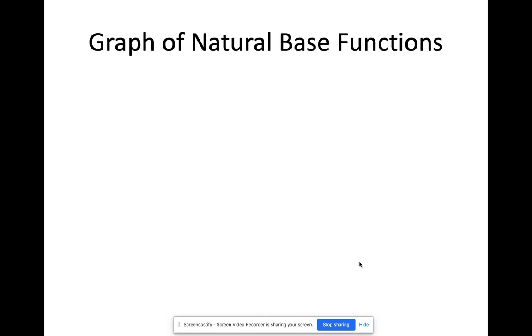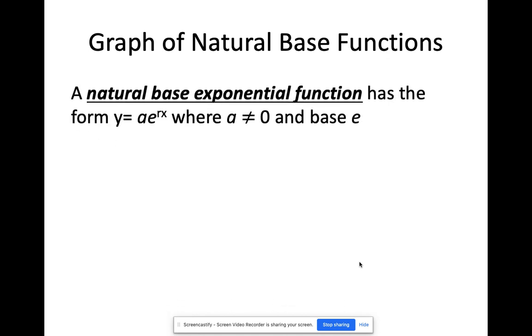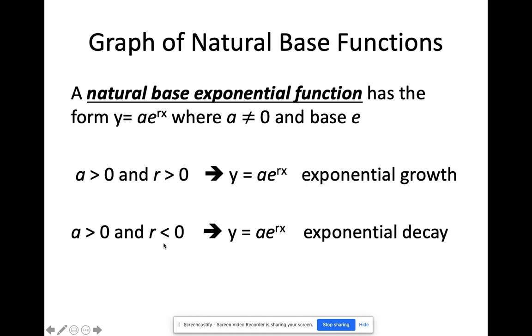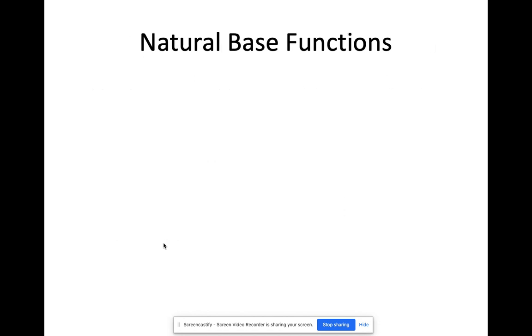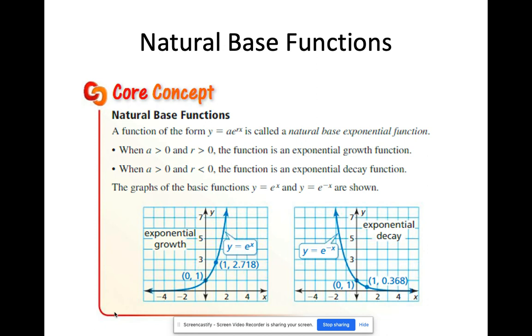So generally, the graph of a natural base function is the same thing as either a growth or decay. So it depends upon what your value of A and what value of your r is. So again, for it to become an exponential growth, both A and r should be positive. The exponent should be positive and A should be positive. And exponential decay, A is positive when r is negative. So the graph would somehow look like this. So this one is an example of exponential growth whose base is e. And this one is an exponential decay whose base is e. Still, it follows the same property. They all go through (0, 1).